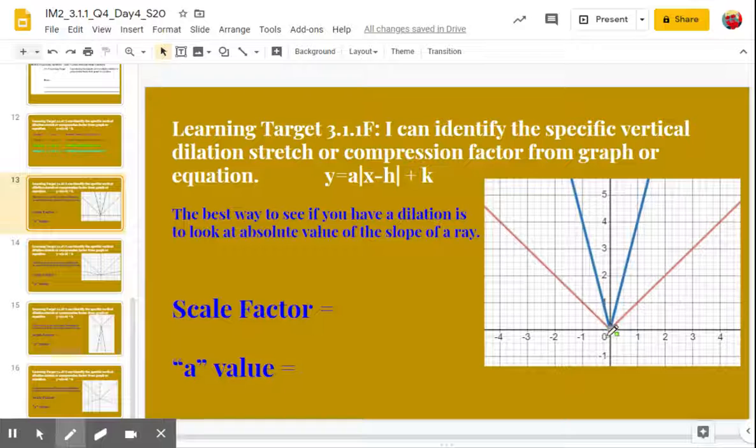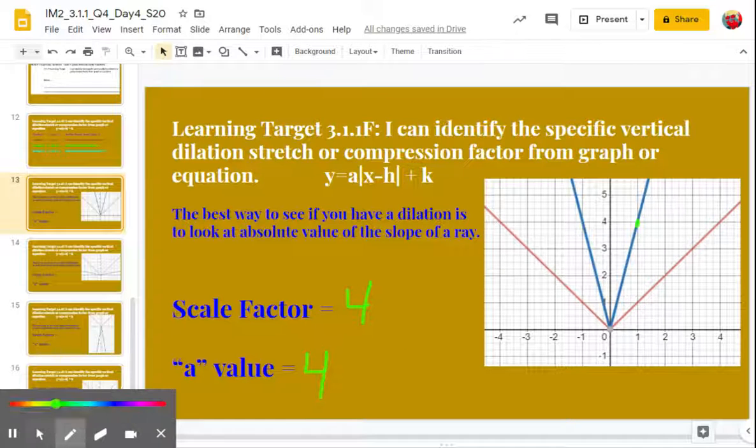So this one, we know the parent graph I go up one over one, so that's a slope of one here. But what happens on my blue one here, the dilated one, I go up four over one. So this means my slope is four, and so my A value is four, and it's positive because this is opening up, and that's the same as my scale factor. So my scale factor is also four.